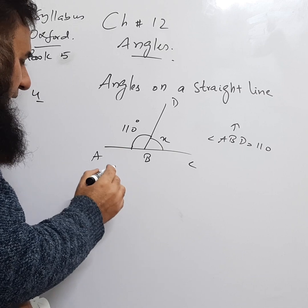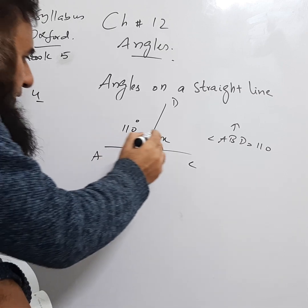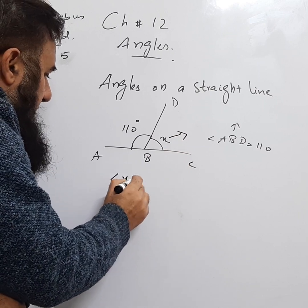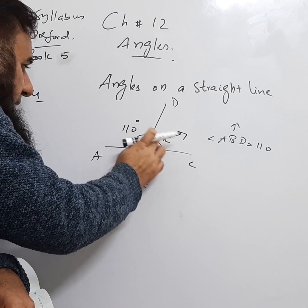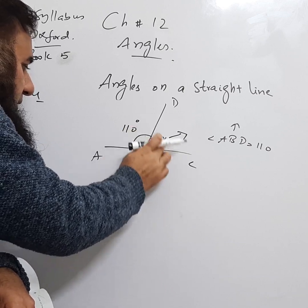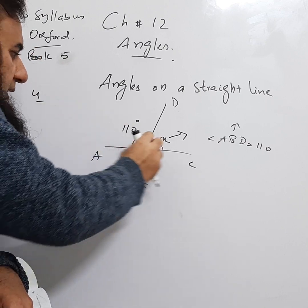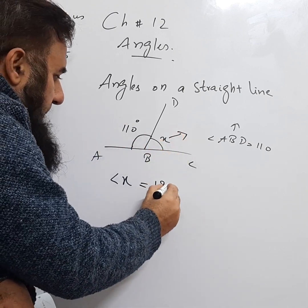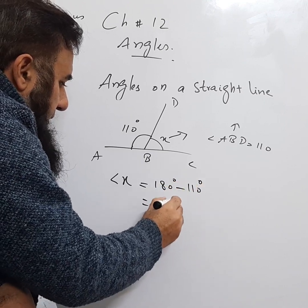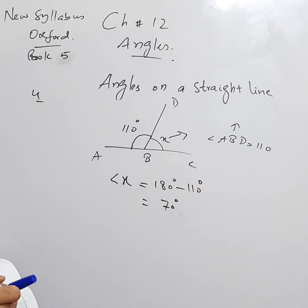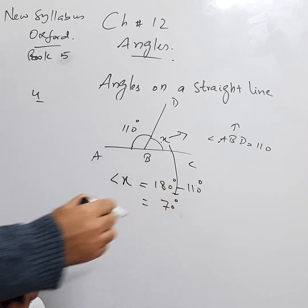This is simple because the whole angle is on a straight line. We know that angles on a straight line are equal to 180°. So angle x equals 180° minus 110°, which gives us x = 70°. That is the answer.